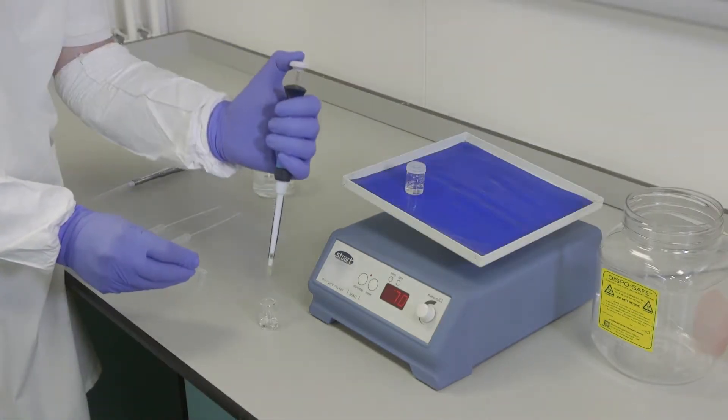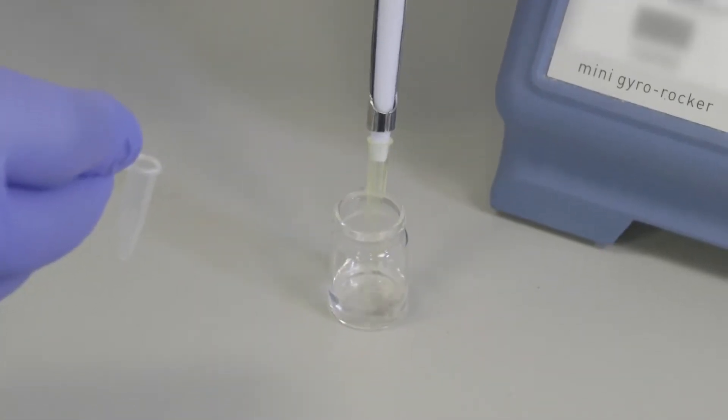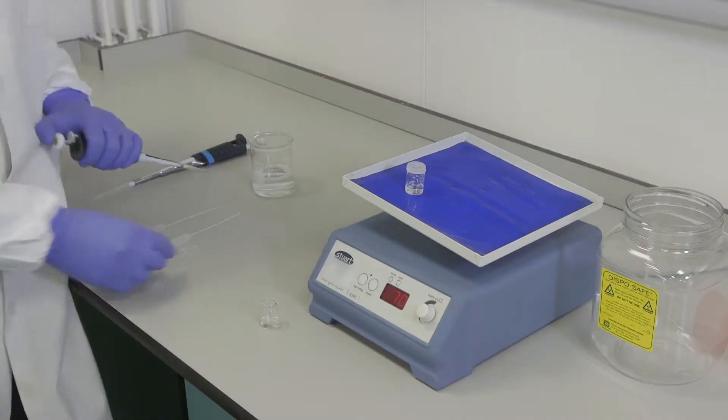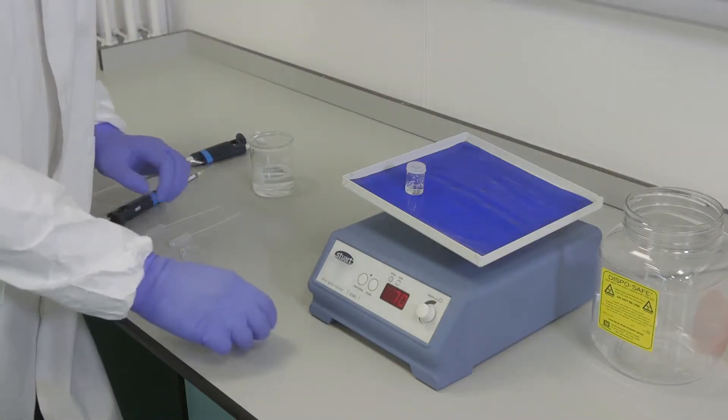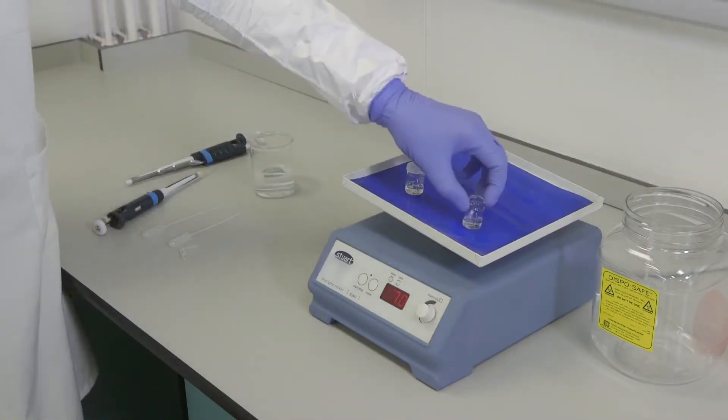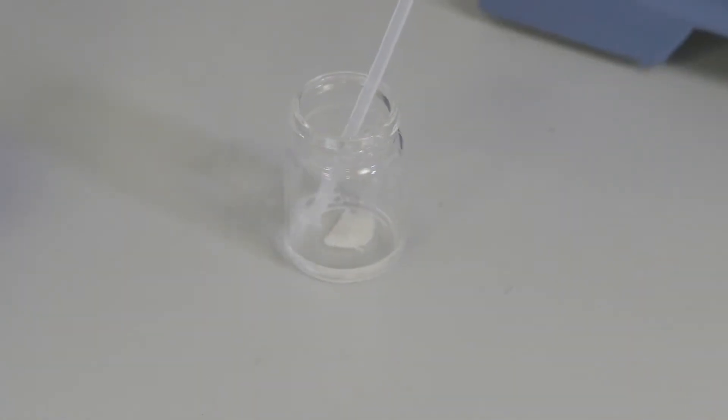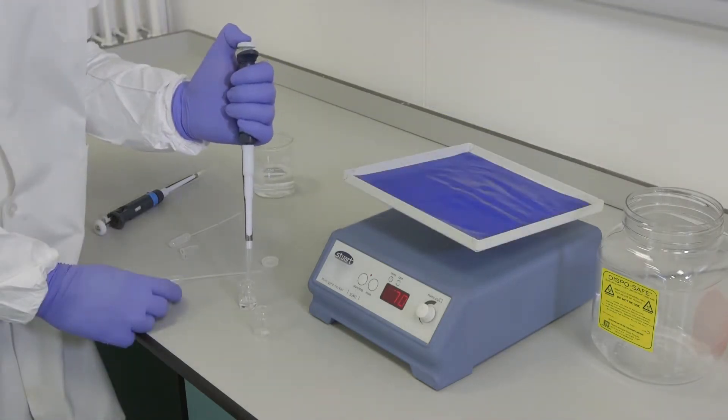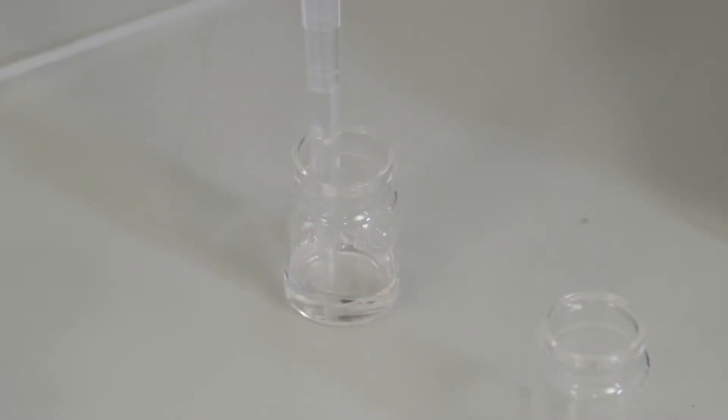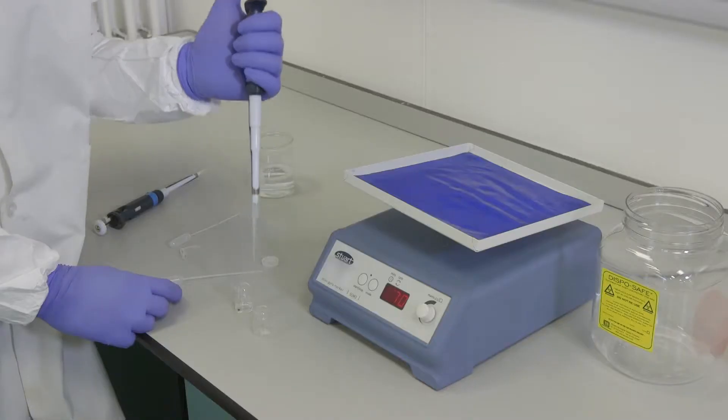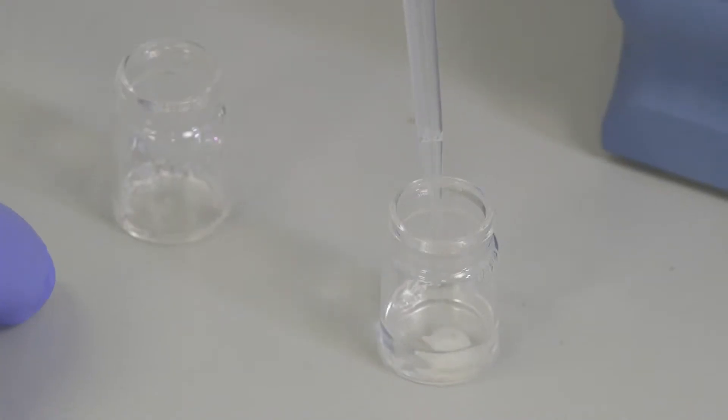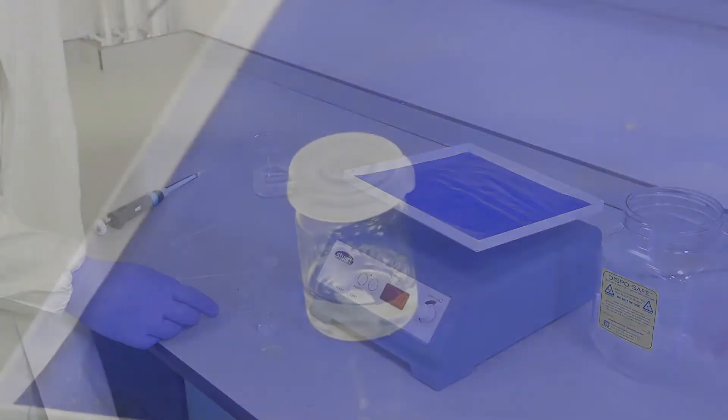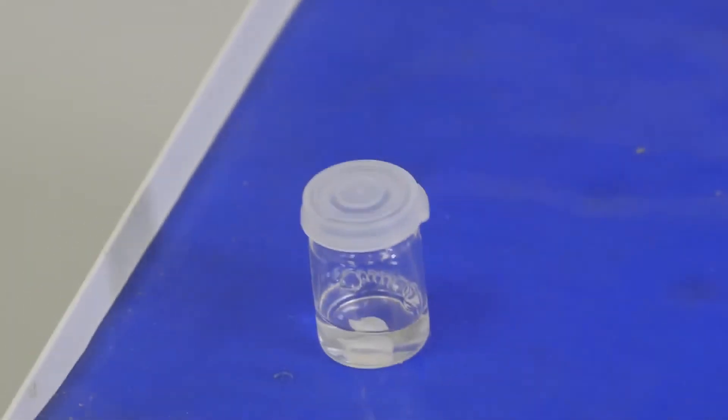Prepare the blocking solution by adding 4% normal goat serum to 1% Tris Triton solution. Carefully remove the 1% Tris Triton solution from the last wash and add the blocking solution to the brain slice. Leave to block for 1 hour with agitation.